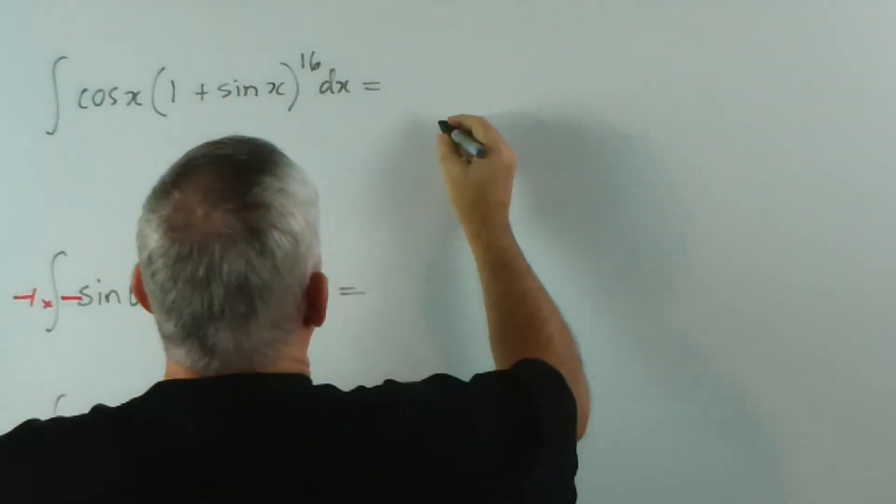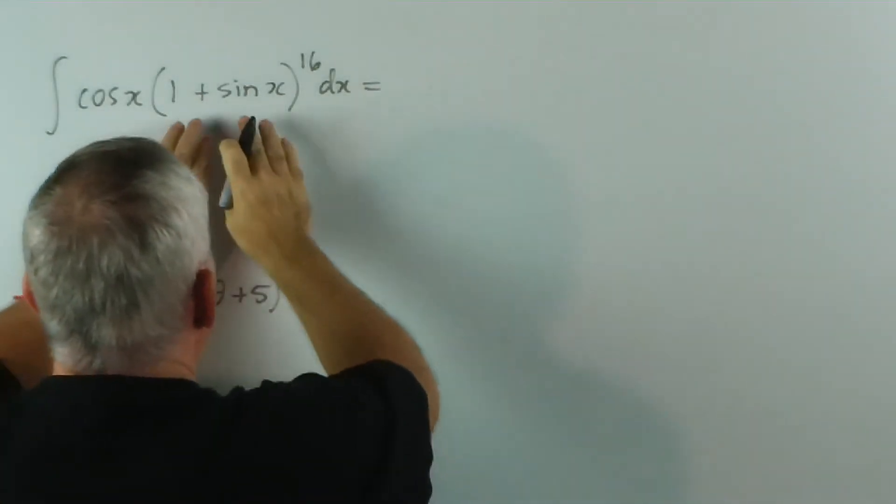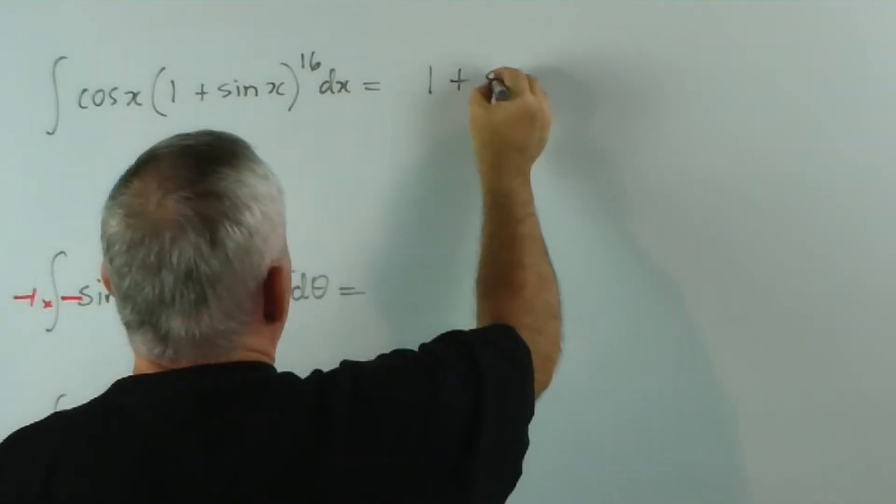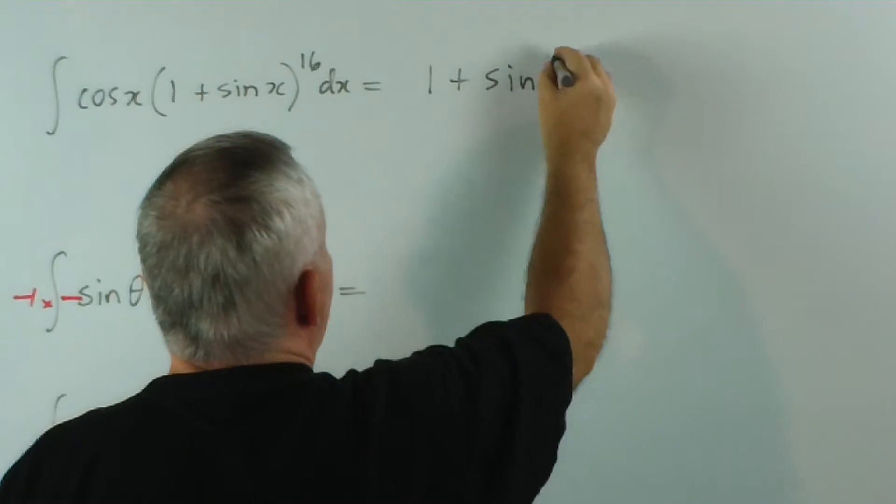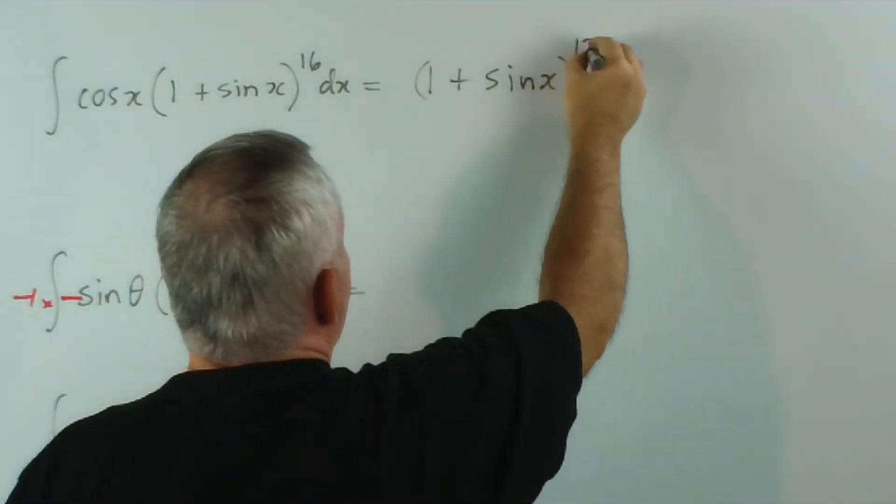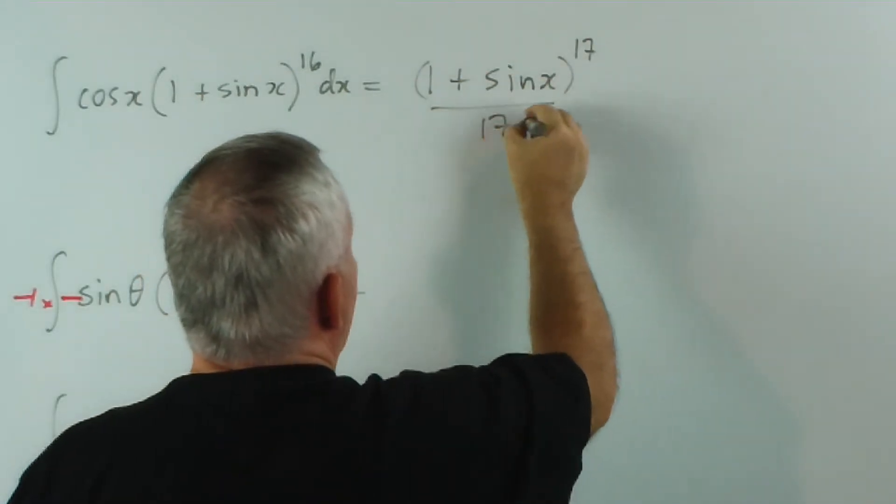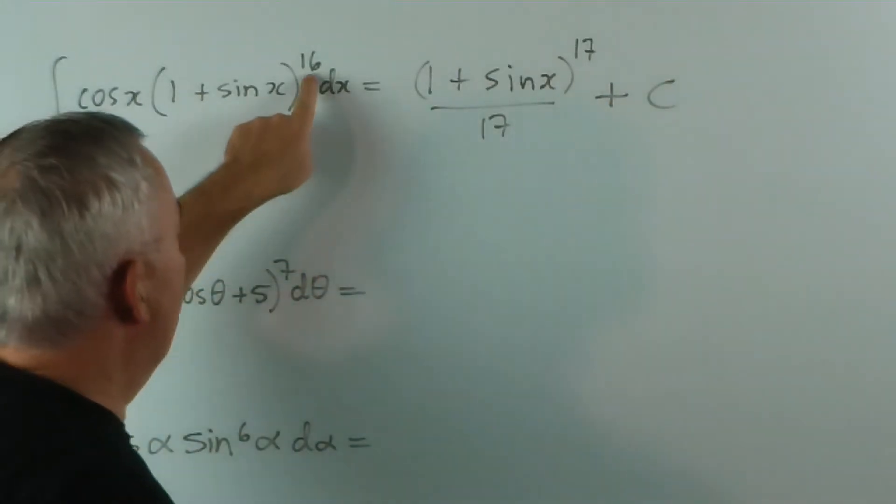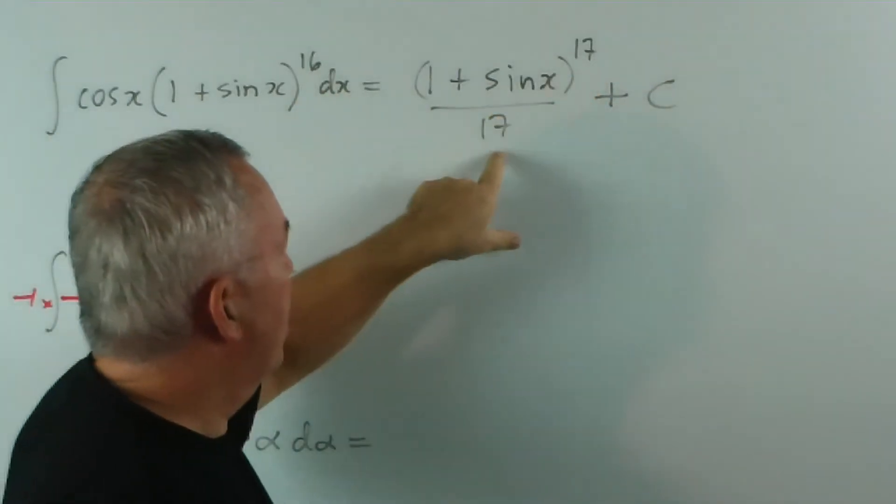And the pattern is simply this. If you have the exact derivative at the front, then the integral is just 1 plus sin x to the 17 over 17 plus c. That's it.